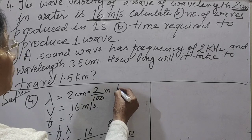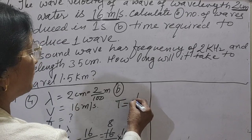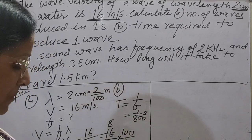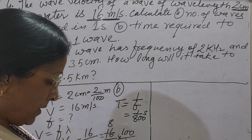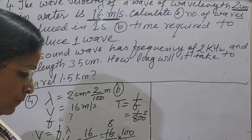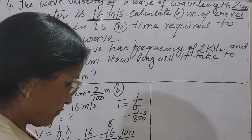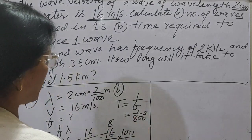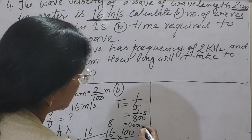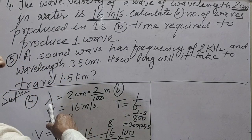Now for part B, we need the time period. Time period equals 1 upon frequency, so 1 upon 800 hertz. After dividing 1 by 800 we get 0.000125 second. This much time will be taken to produce one wave. We only need to understand the language of the question and apply simple formulas to calculate.